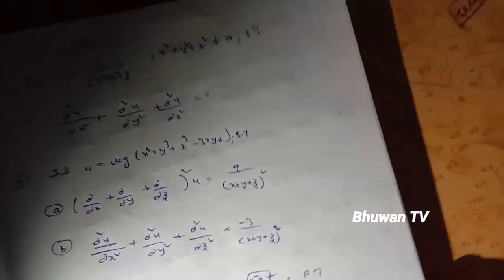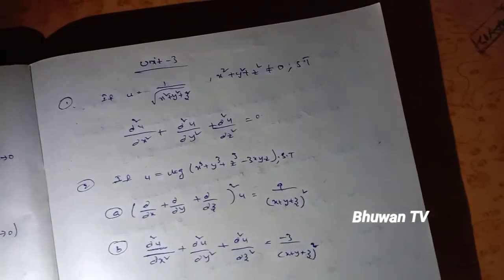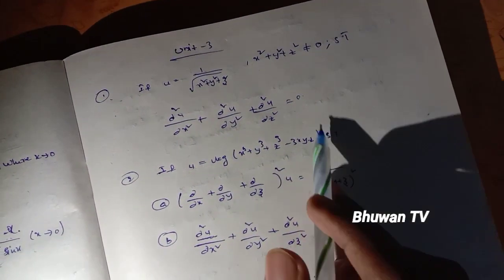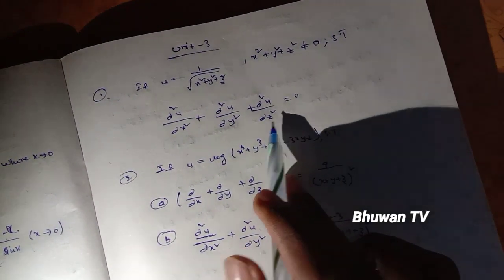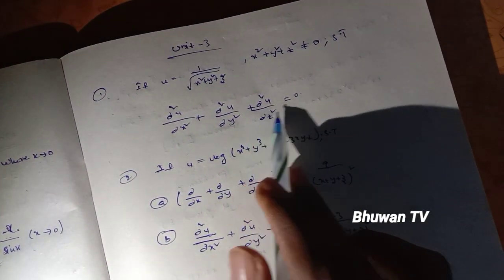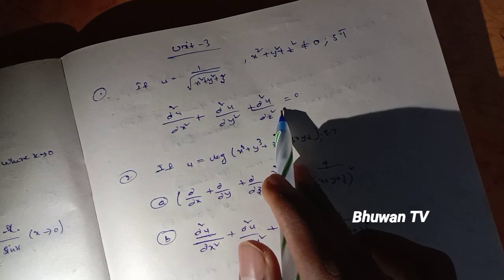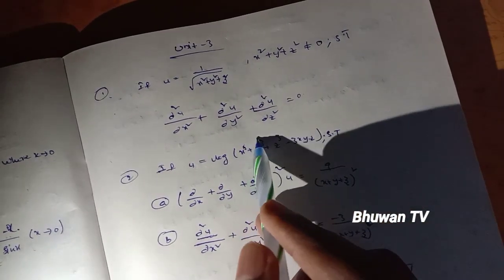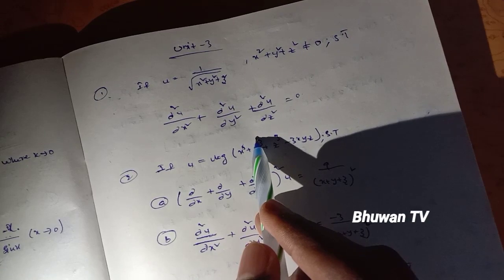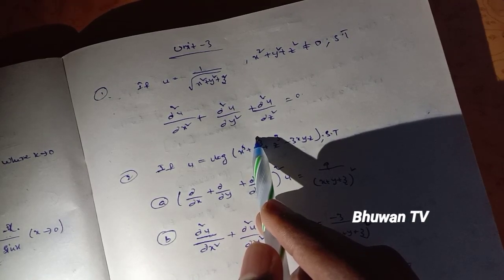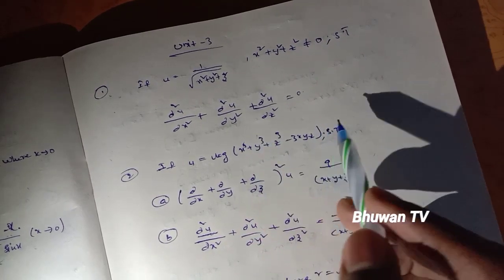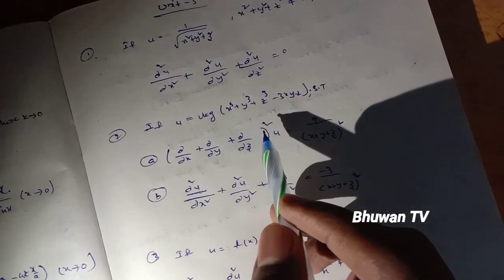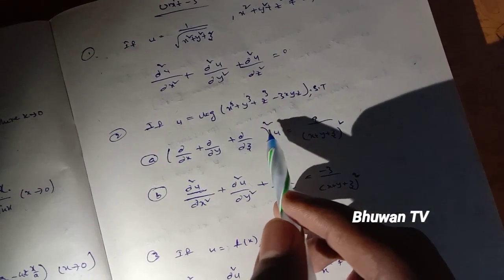Third unit — partial derivatives. If u equals 1 / √(x² plus y² plus z²), where x² plus y² plus z² ≠ 0, show that ∂²u/∂x² plus ∂²u/∂y² plus ∂²u/∂z² equals 0.